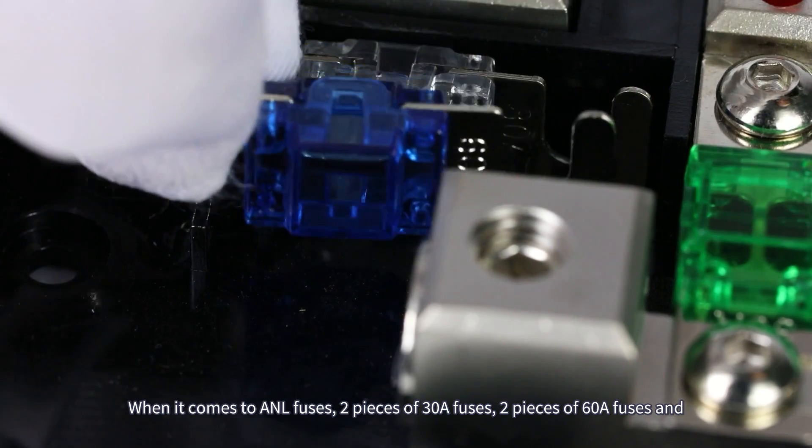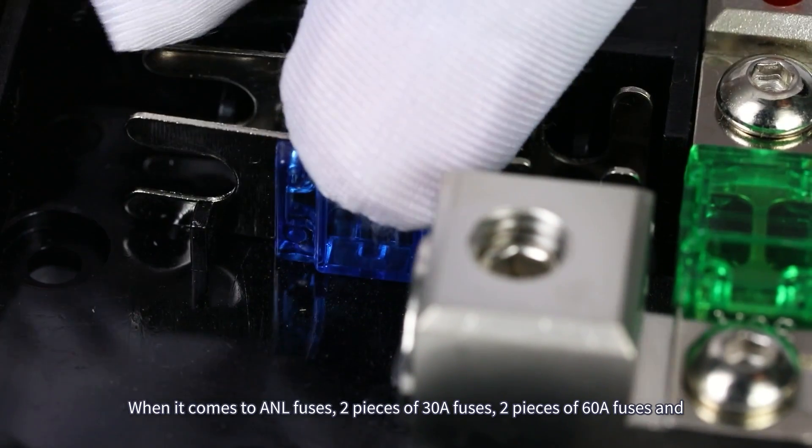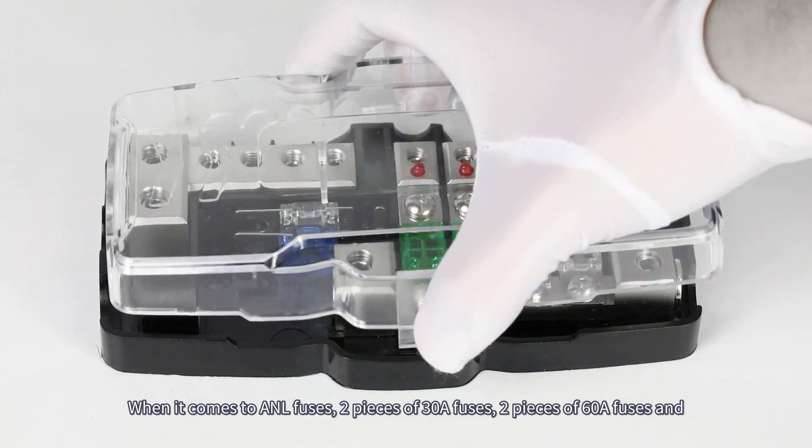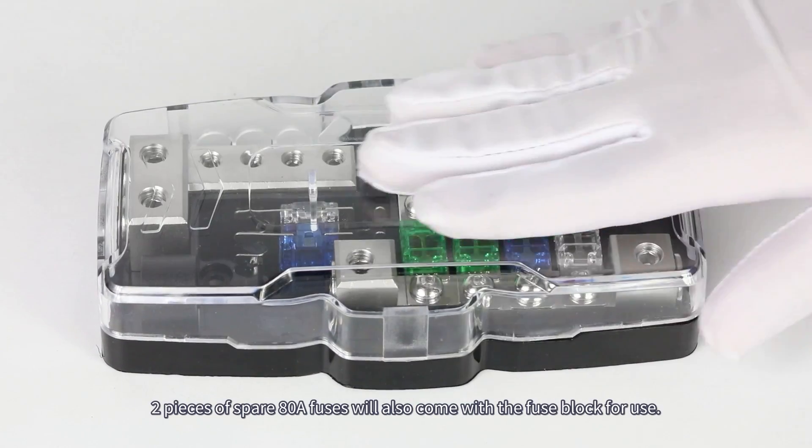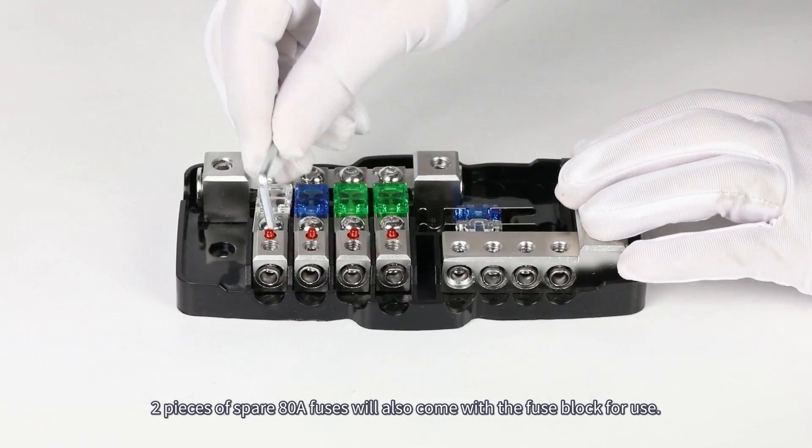When it comes to ANL fuses, 2 pieces of 30A fuses, 2 pieces of 60A fuses, and 2 pieces of spare 80A fuses will also come with the fuse block for use.